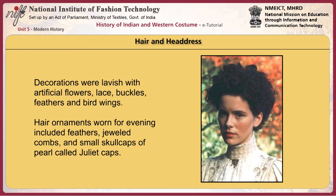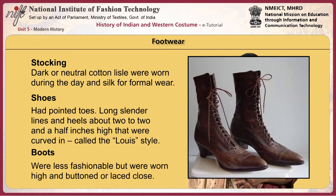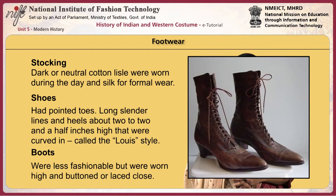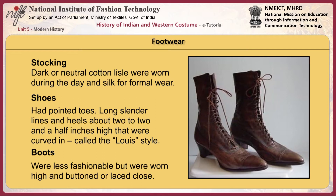For footwear, stockings of dark or neutral cotton lisle were often worn during the day, and silk for formal wear. Some were decorated with coloured clocks, designs knitted into the stockings, or lace insertions. Shoes had pointed toes, long slender lines, and heels about two to two and a half inches high that were curved in, called the Louis style. Boots were less fashionable but were worn high and buttoned or laced closed. Accessories included large flat muffs, suede or leather daytime handbags or beaded evening bags. Decorative lace or silk parasols were trimmed with fringe or lace. For evening, women carried long folding fans or ostrich fans. Swiss belts were revived from the 1860s. Ruffles, boas, ribbons, or cravats were worn around the neck.